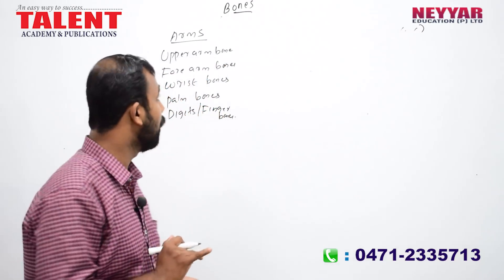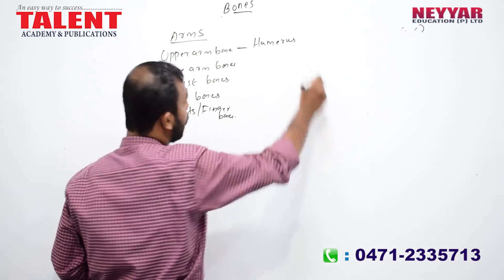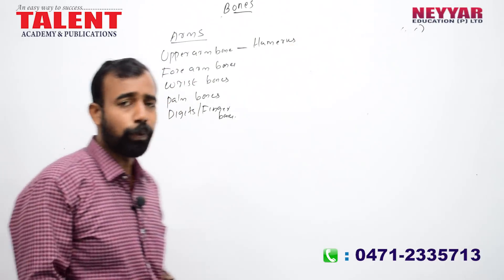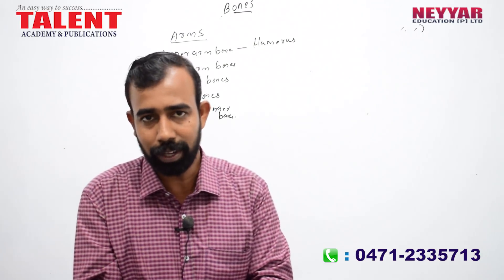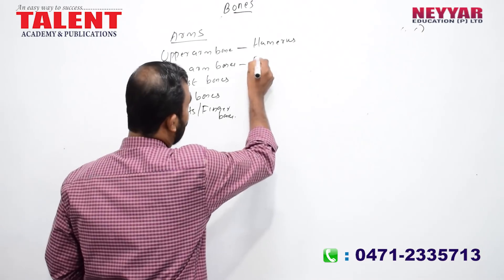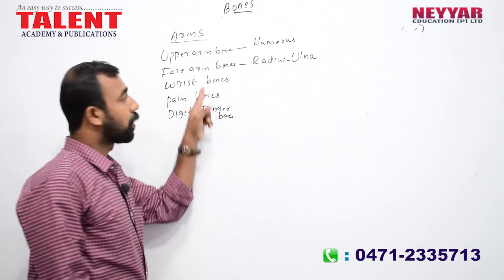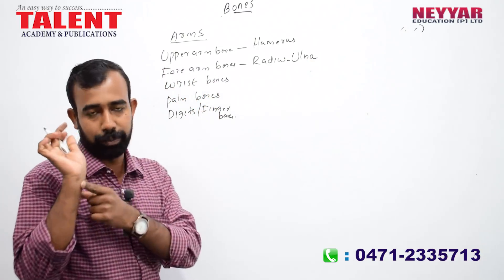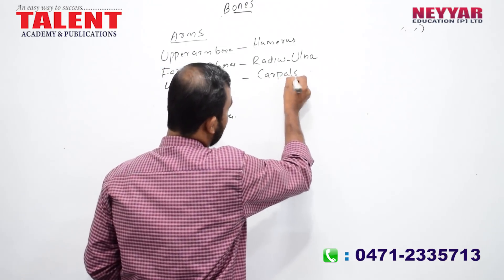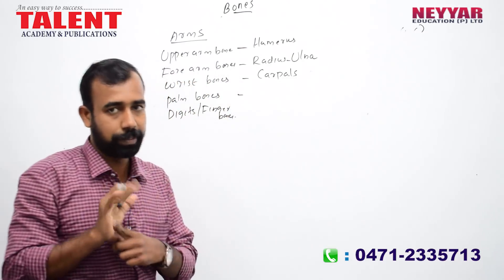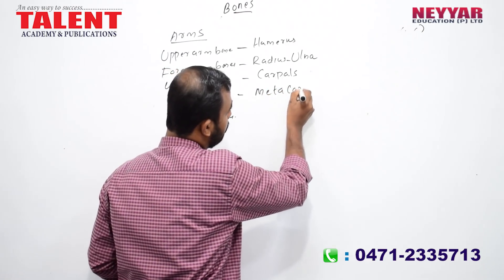Now the scientific names: the upper arm bone is the humerus. The forearm has two bones — the radius and the ulna. Wrist bones are known as carpals. Palm bones are called metacarpals.